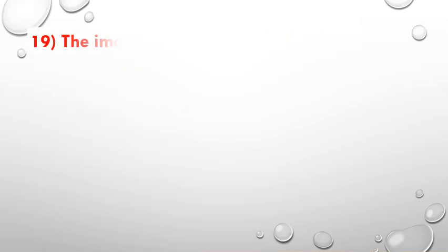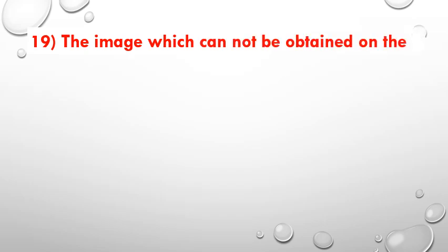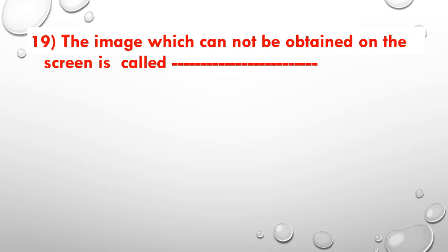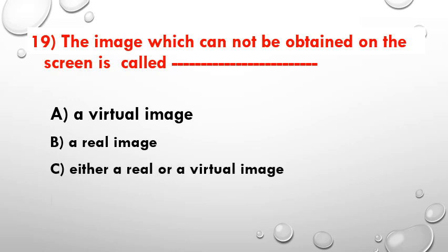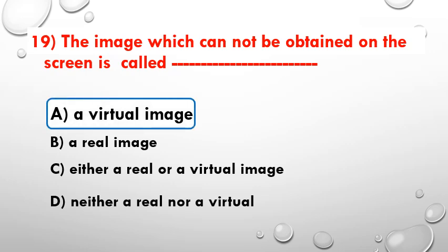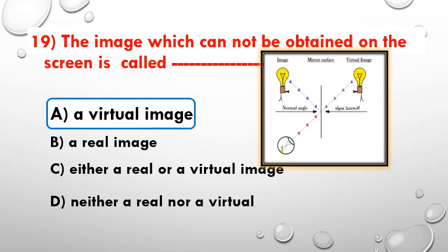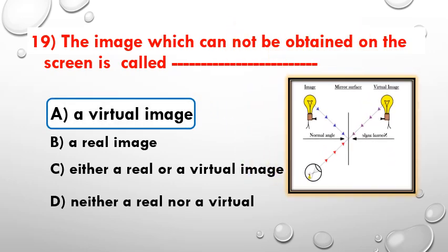The image which cannot be obtained on a screen is called — option A: virtual image, option B: real image, option C: either real or virtual, option D: neither real nor virtual. The answer is a virtual image. Observe the picture.